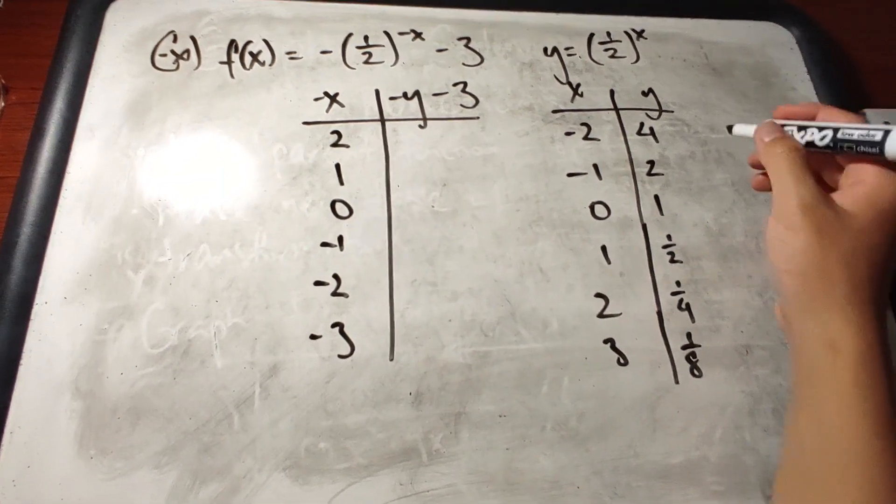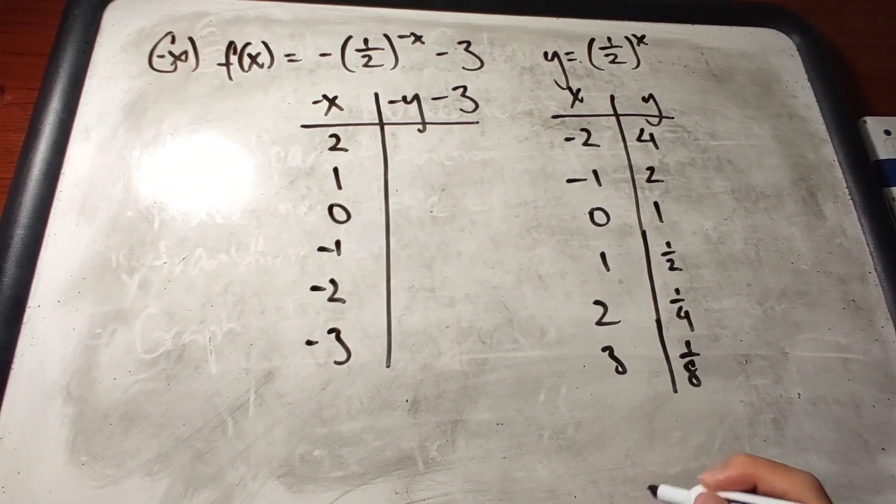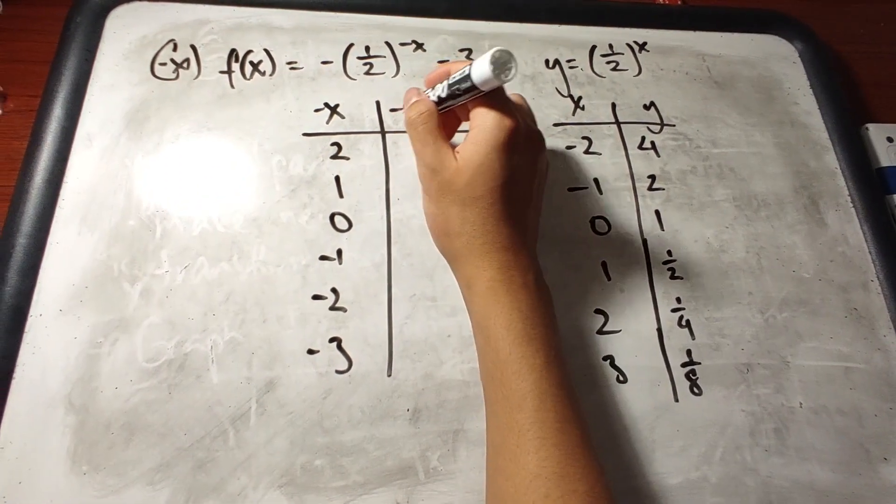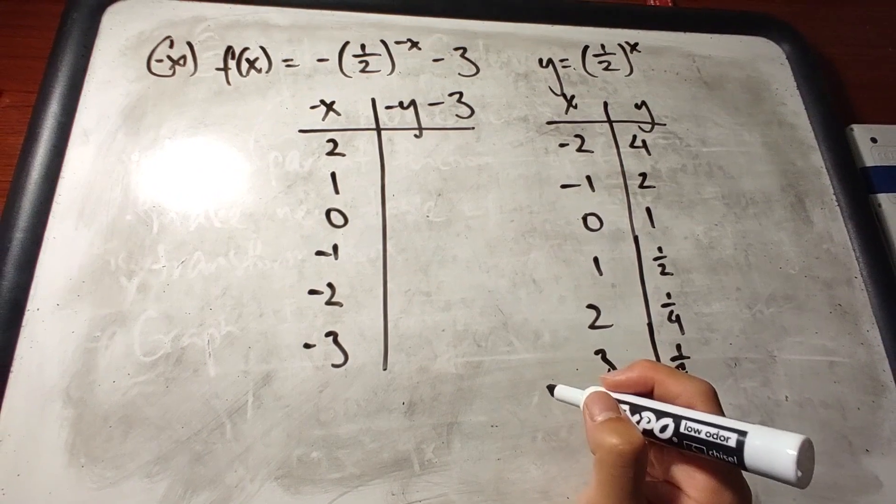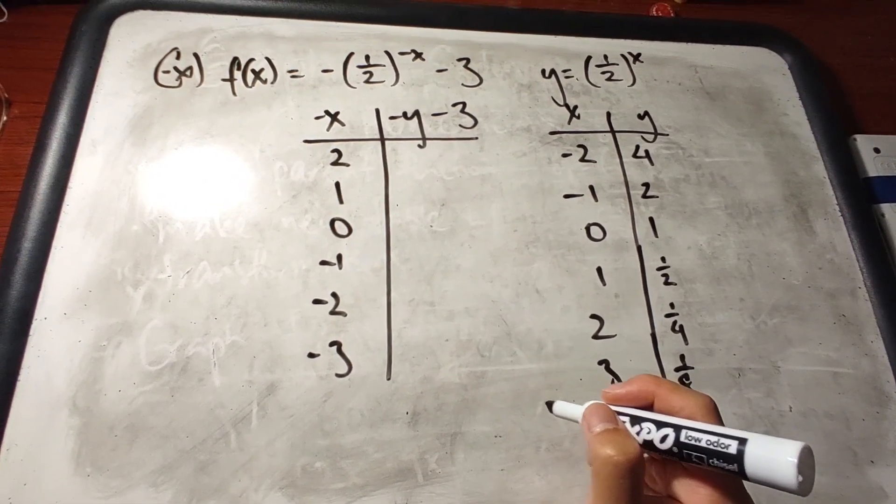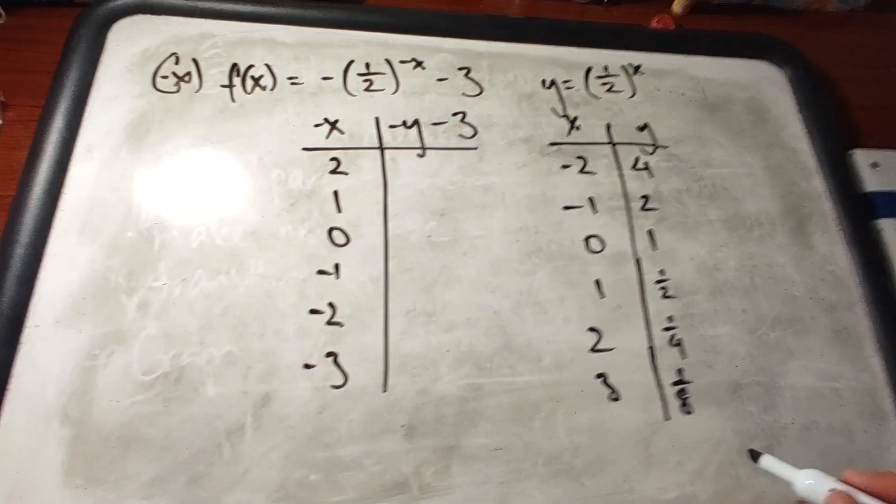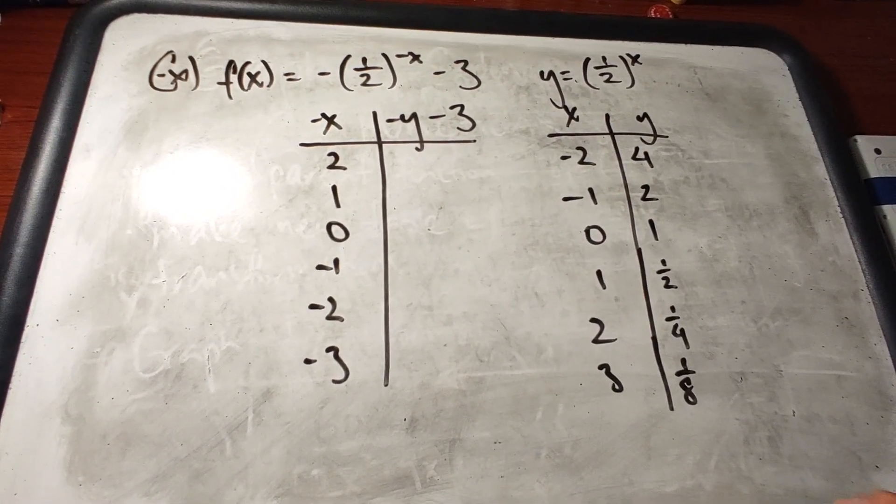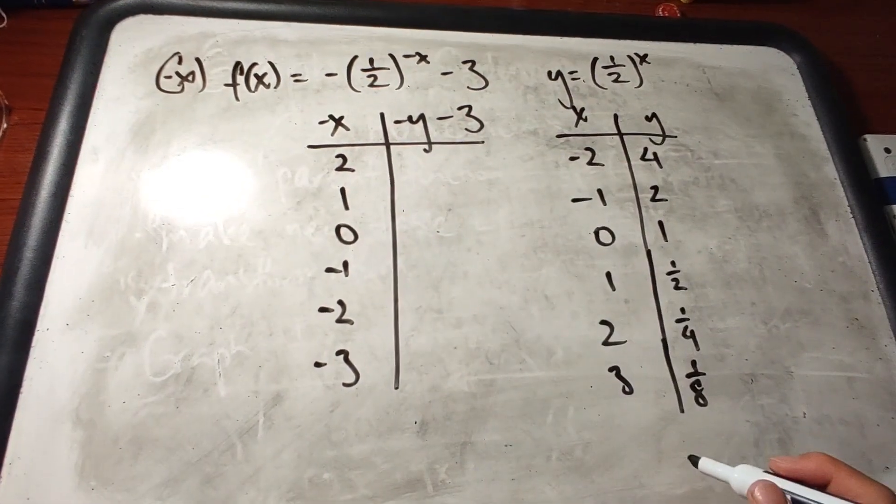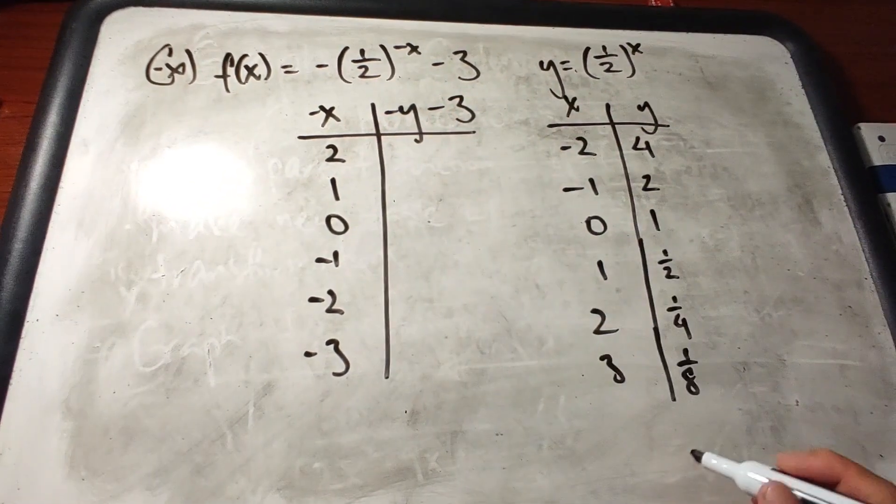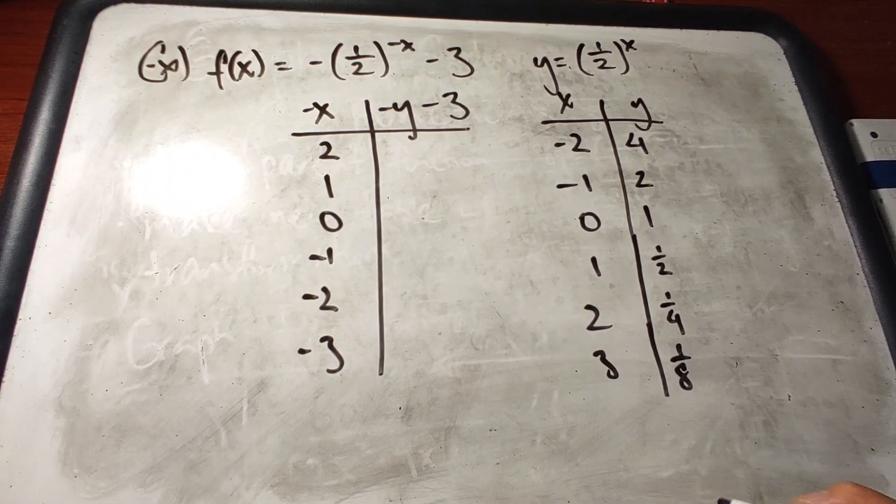In this case, the y becomes negative y minus 3. And the reason why the negative doesn't incorporate the 3 as well is because of PEMDAS, so multiplication comes before subtraction. And that is why it stays negative y minus 3, instead of negative of the quantity y plus 3.